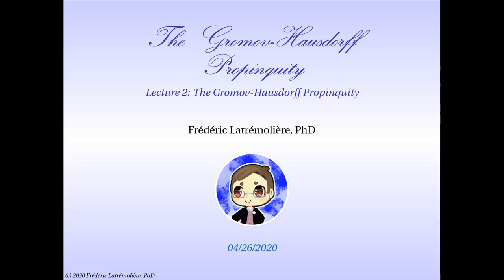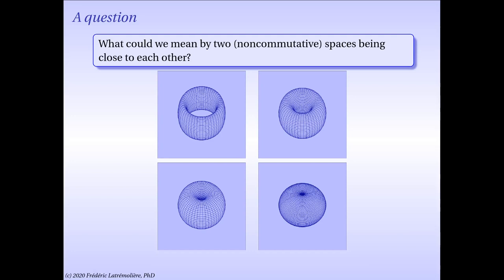Welcome to the second lecture on the Gromov-Hausdorff propinquity. In this lecture, we wish to offer a possible answer to the question: what could we mean by two noncommutative spaces being close to each other?